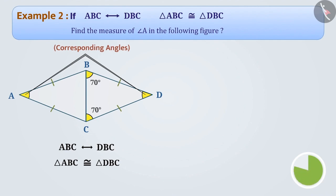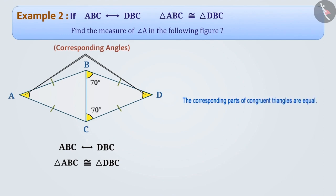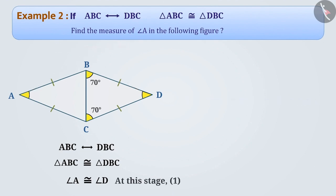Since the corresponding parts of congruent triangles are equal, we can say that the corresponding angles of congruent triangles, angle A and angle D, will also be congruent. You must remember that the sum of all angles of any triangle is 180 degrees. So in triangle DBC, angle DBC plus angle DCB plus angle D is equal to 180 degrees.